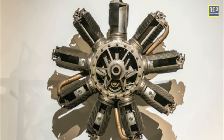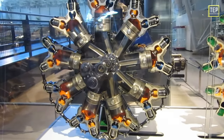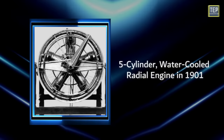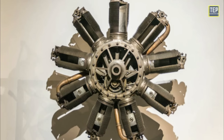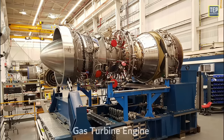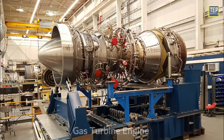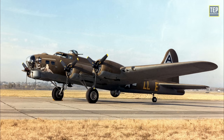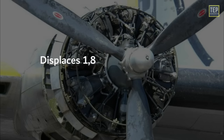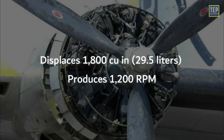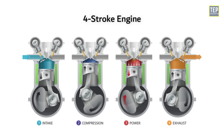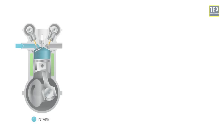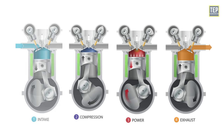The radial engine is a reciprocating type internal combustion engine in which the cylinders radiate outward from a central crankcase like the spokes of a wheel. C.M. Manley constructed a water-cooled 5-cylinder radial engine in 1901. The radial configuration was commonly used for aircraft engines before gas turbine engines became predominant. A typical radial engine in a B-17 has nine cylinders, displaces 1,800 cubic inches, and produces 1,200 horsepower. Radial engines work like any other four-stroke engine, with each cylinder having intake, compression, power, and exhaust strokes.